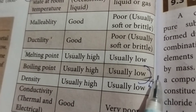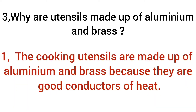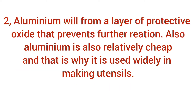Third question: why are utensils made of aluminium and brass? First, cooking utensils are made of aluminium and brass because they are good conductors of heat. Second, aluminium forms a layer of protective oxide that prevents further reaction. Also, aluminium is relatively cheap, and that is why it is widely used in making utensils.